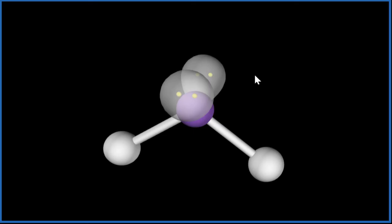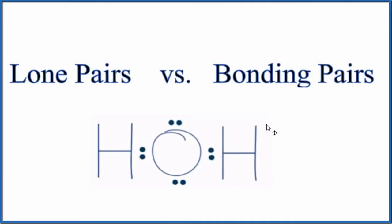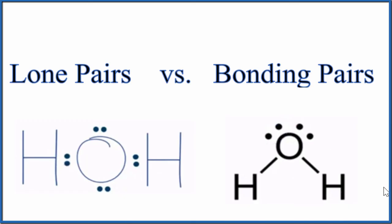So again, lone pairs occupy space and they influence the shape or the molecular geometry of a molecule. Let's go back. Sometimes you'll see the Lewis structure for water written like this. And that's to show that we have the bent molecular geometry.